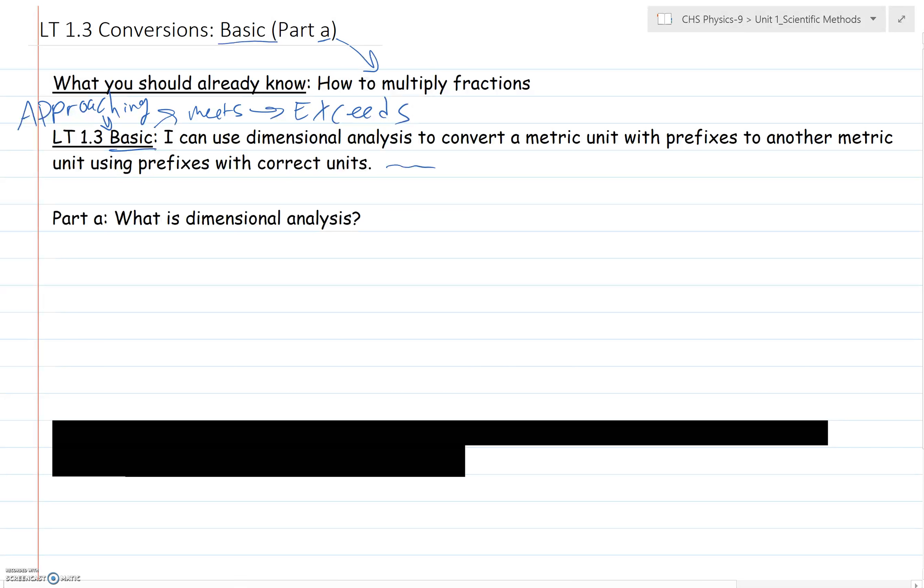Today we're just going to be focusing on the basic level. So part A is all about what is dimensional analysis. There are other fancier definitions, but my definition is that dimensional analysis is a way to do a conversion by making the units work. That's kind of a weird, ambiguous term. Let me show you what I mean.